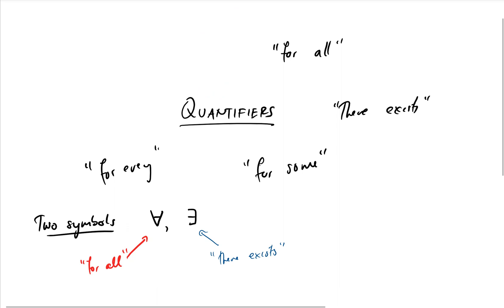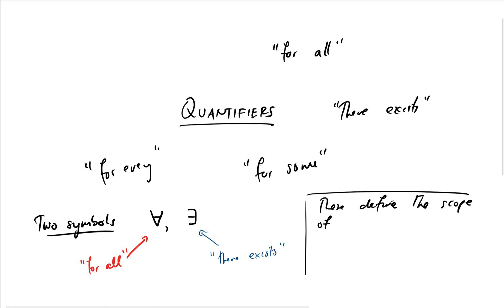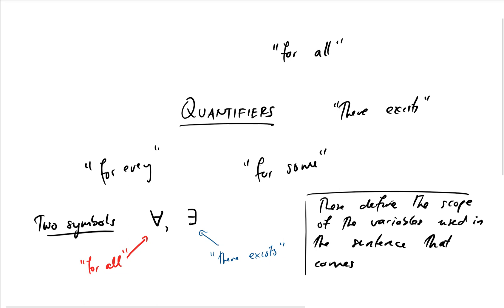When we have these two things, they let us define the scope of the variables that are going to follow in the sentence that comes after. So these define the scope of the variables used in the sentence that comes next.